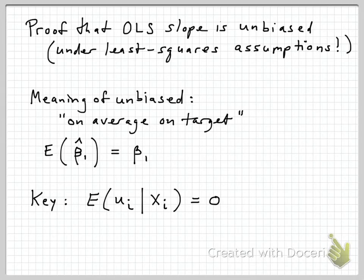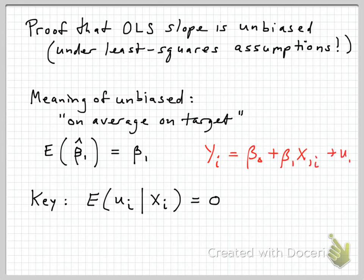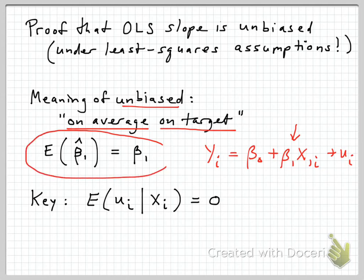When we estimate a regression using ordinary least squares from a sample of our population, we're trying to get good estimates of the intercept, and often in particular the slope. If we think of yi as our outcome variable, and we're saying it depends on a linear function of the x variable plus some other factors in the error term, we're trying to get a good estimate of this slope parameter. One way in which it should be good is that it's unbiased — meaning the estimate is on average on target. Our estimate is what we call beta 1 hat, and unbiased technically means that the expected value of beta 1 hat, the estimate you get from your regression, is equal to beta 1, the underlying population effect.